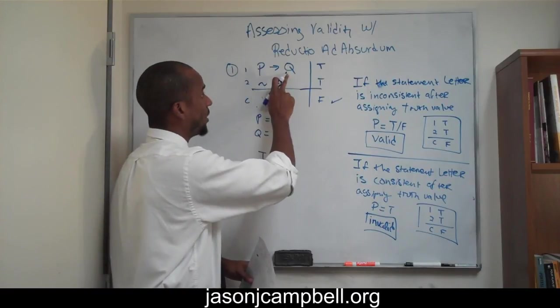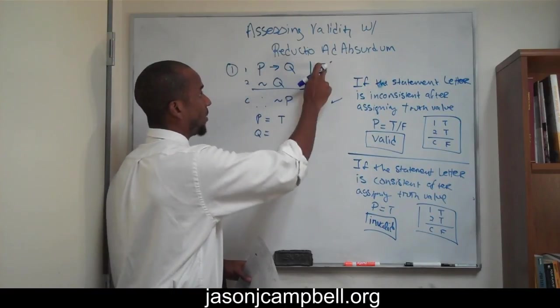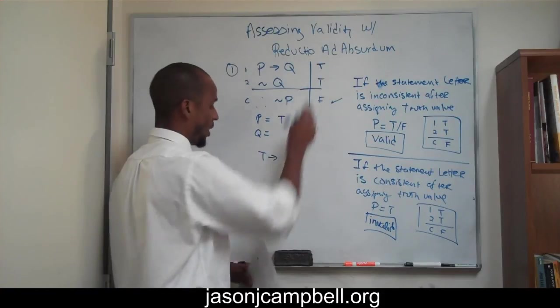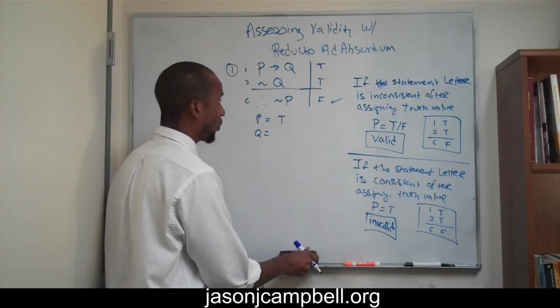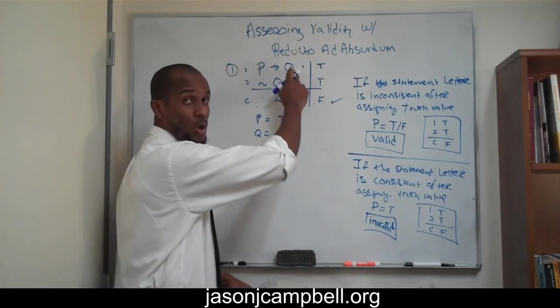If Q is false, then this whole premise becomes false, and we don't want it to be false. So we recognize that Q, in order for this to work, Q has to also be true.